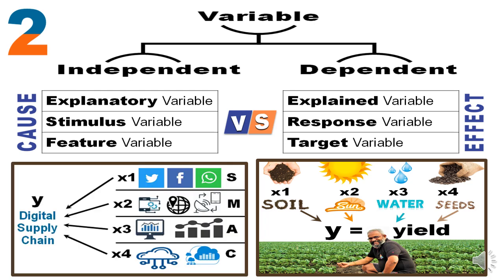A more business-oriented example: the efficacy of a digital supply chain. I would be concerned about the quality of data sourced from social media, how I access the data (mobility), how we gain insights from this data (analytics), and where I store this data (cloud). In a single equation: y = β1·x1 + β2·x2 + β3·x3 + β4·x4, where the beta values measure how strongly each stimuli variable — social, mobility, analytics, and cloud — impacts the response variable, digital supply chain efficacy.